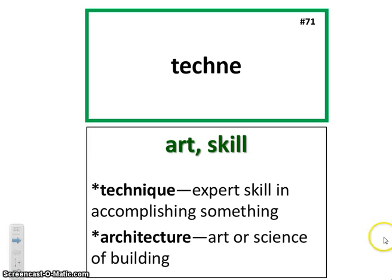The first one is techni. It's where we get the word technology. It can mean art or skill. I usually think of it more as skill. For example, if you have good technique in painting, you're very good at painting. Architecture is the technique — the science of building something.